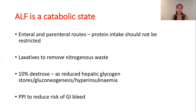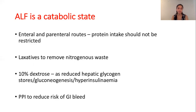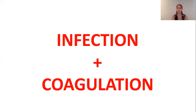Regarding nutrition: acute liver failure is a catabolic state, so patients should receive either enteral or parenteral feeding. Protein intake should not be restricted as there is reduced protein binding and reduced metabolism. Laxatives are important to remove nitrogenous waste, and 10% dextrose can be given because of a reduction in hepatic glycogen stores, gluconeogenesis, and hyperinsulinemia — but be cautious as dextrose can worsen cerebral oedema. A PPI can be given to reduce the risk of GI bleeds due to coagulopathy.